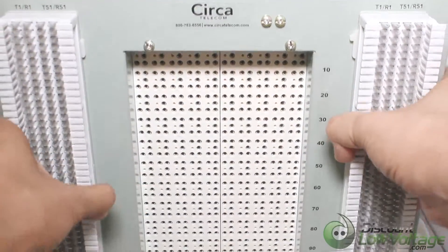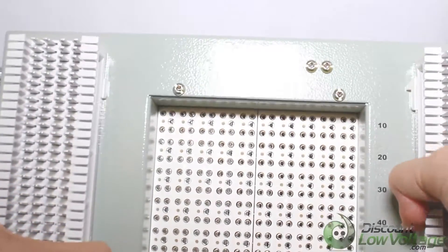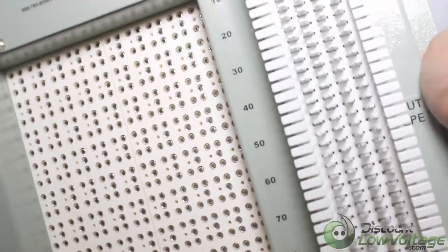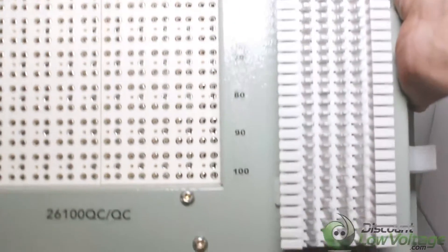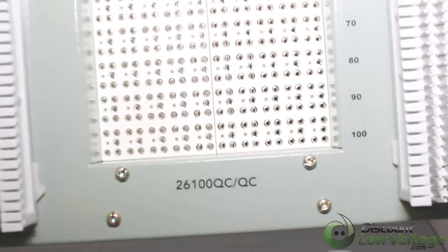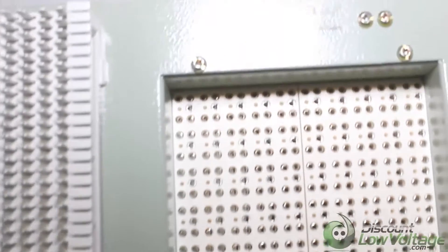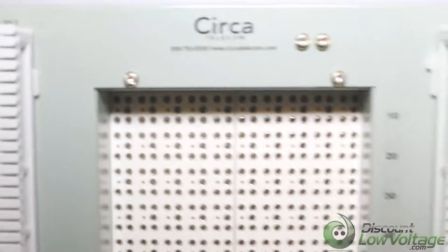The 26100 QCQC 100-Pair Lightning-Protected 66-Block 16-Gauge steel building entrance terminals feature reliable 66-block style quick clip connectors for both the input and the output terminals. Connectors can accept up to 18-gauge line termination.